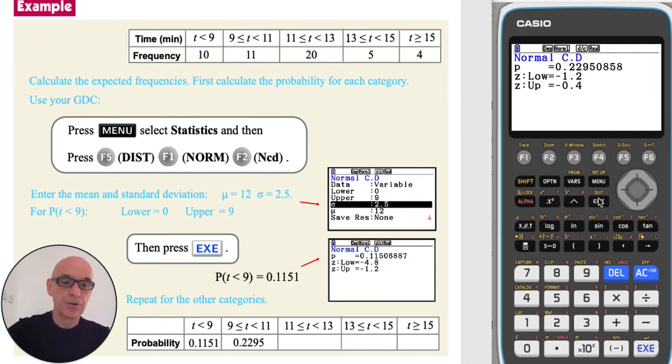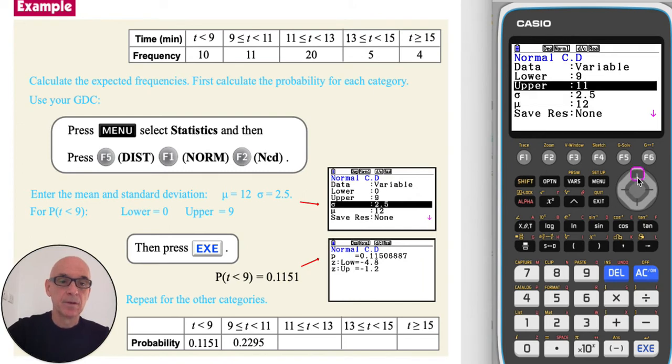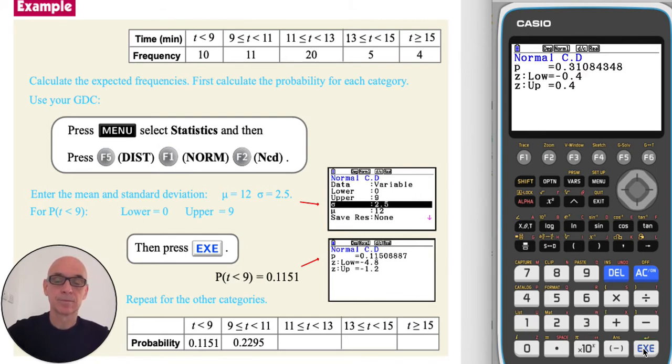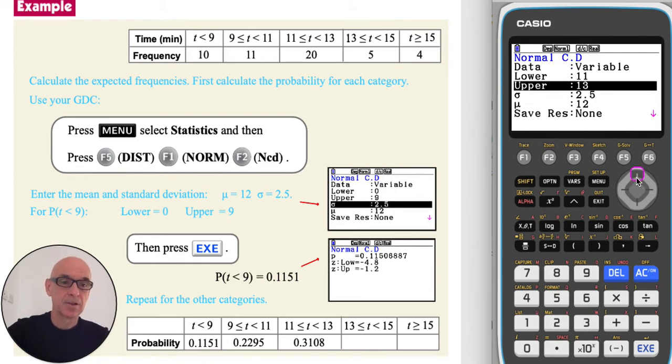For the third category, setting the lower limit to equal 11 minutes and the upper limit to equal 13 minutes. For the fourth category, setting the lower limit to equal 13 minutes.